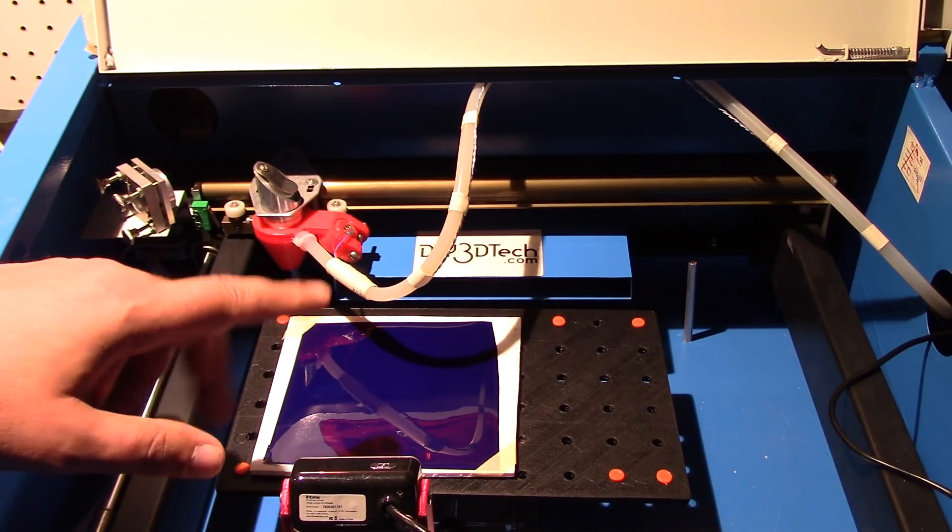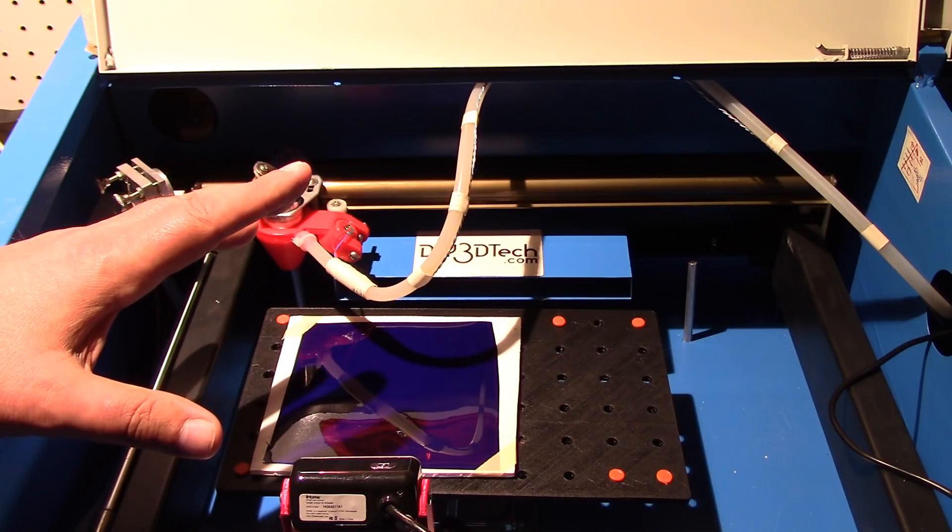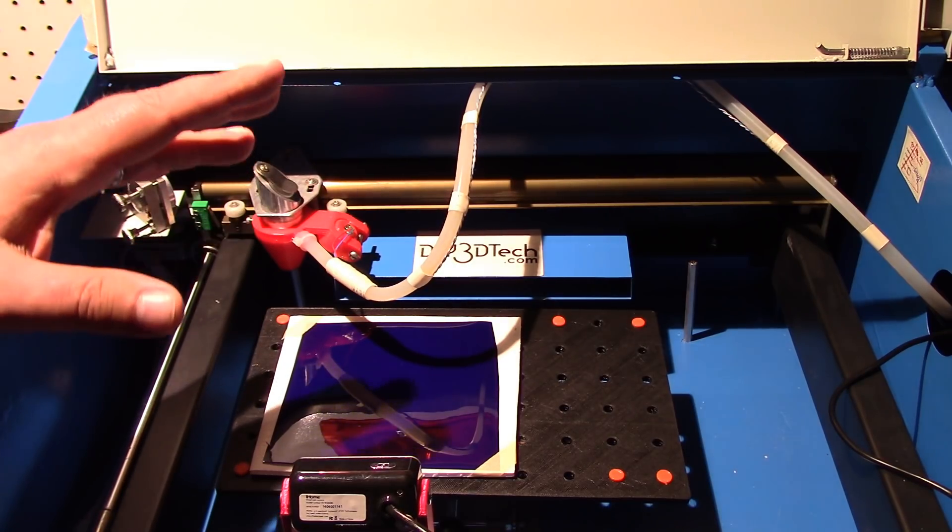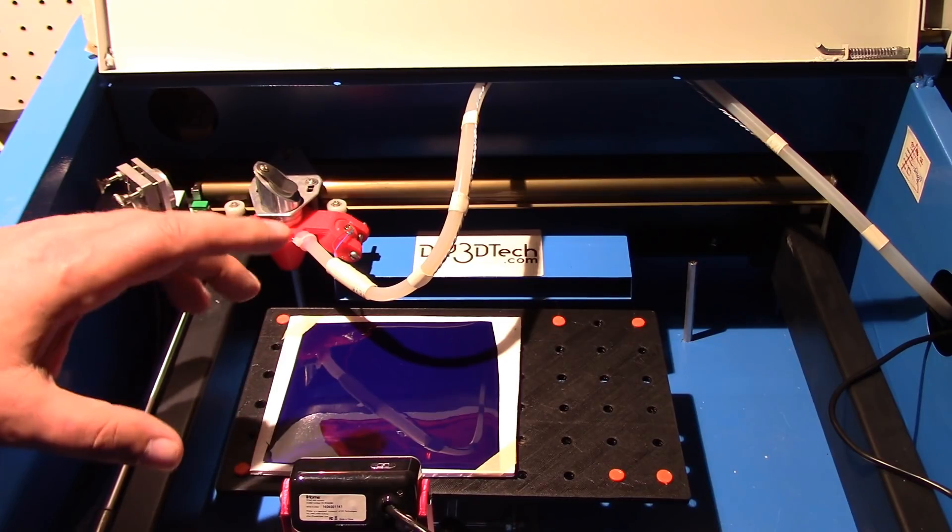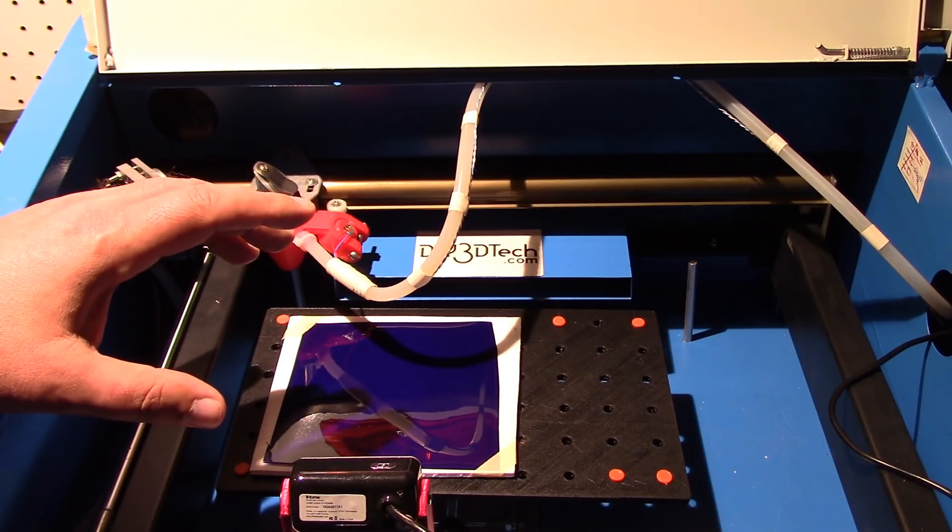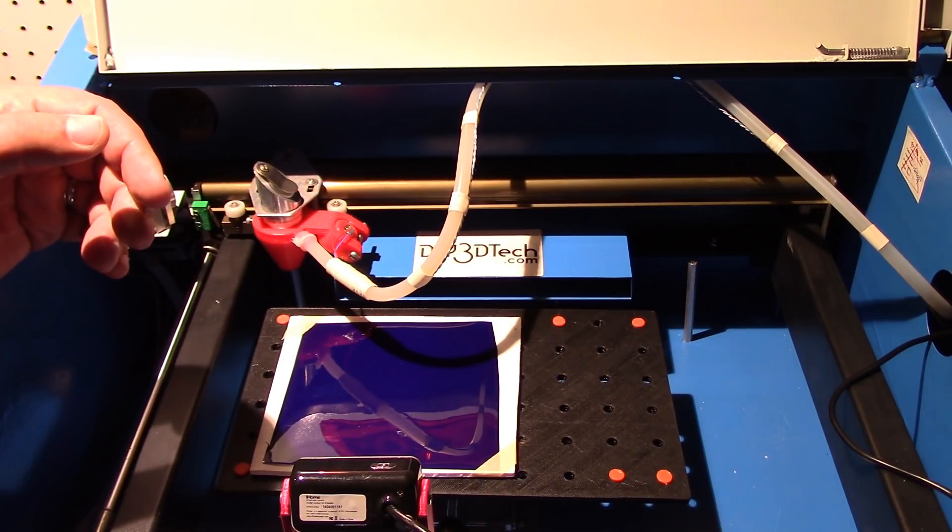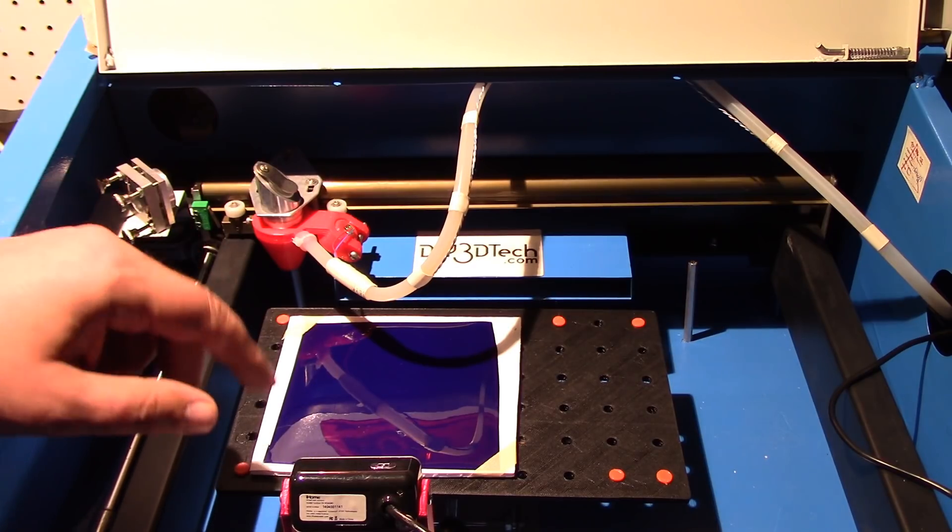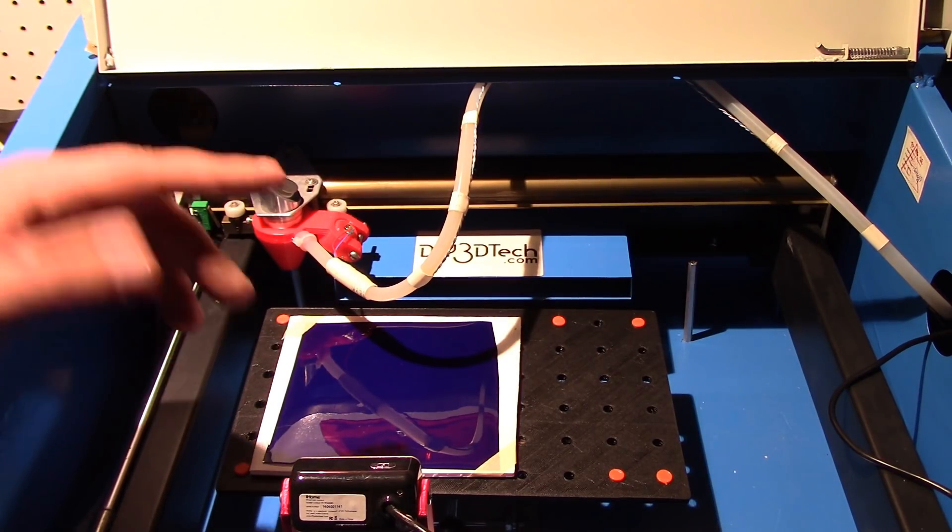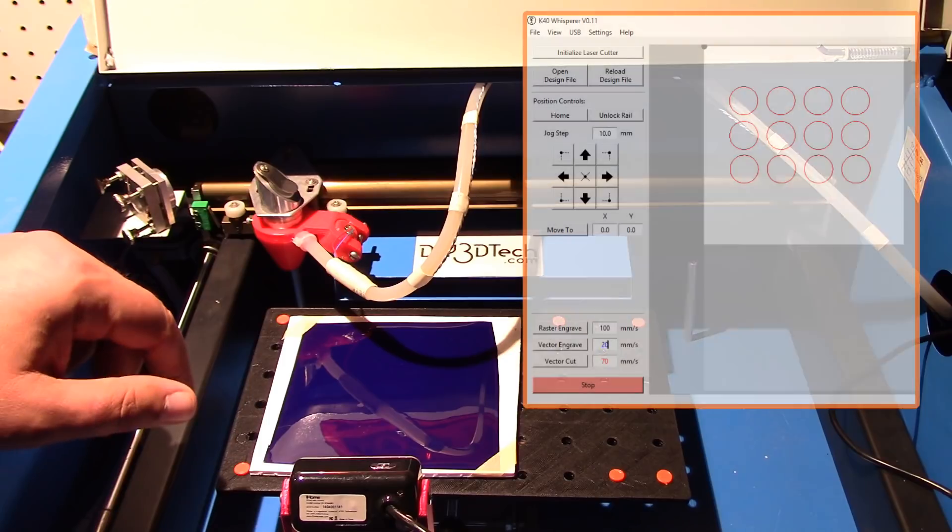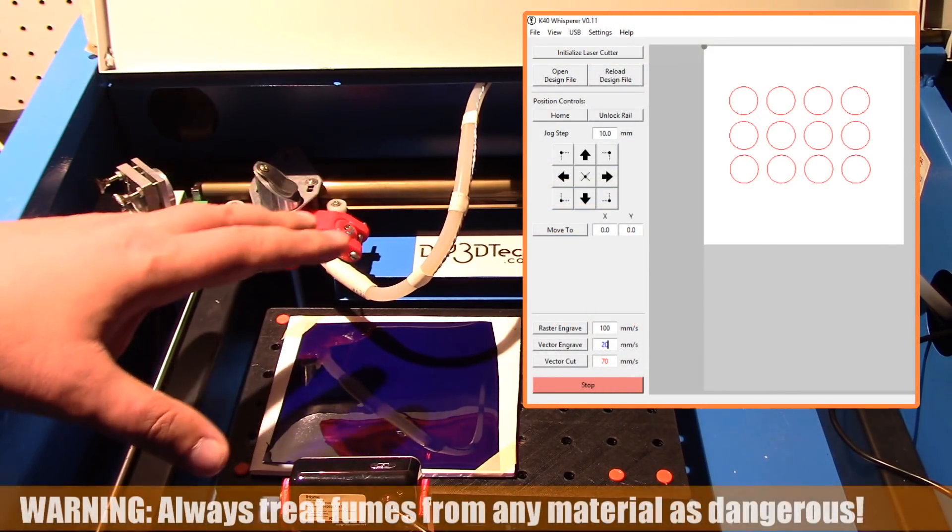What I'm going to do is use the K40 Laser Whisperer to do the cuts. I've got a template that I drew up real quick in Inkscape into an SVG file and loaded that into Laser Whisperer. I'll put up in the corner a screenshot of it. So let's go ahead and do this.